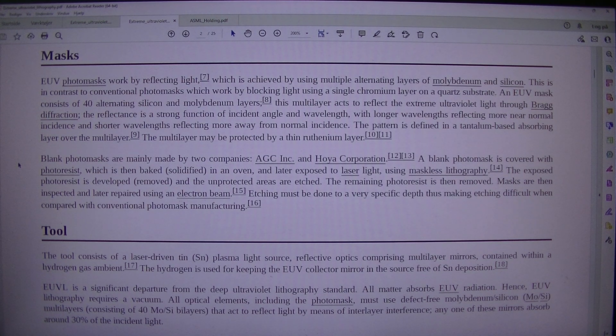Tool: The tool consists of a laser-driven tin plasma light source, reflective optics comprising multilayer mirrors contained within a hydrogen gas ambient. The hydrogen is used for keeping the EUV collector mirror in the source free of tin deposition. EUVL is a significant departure from the deep ultraviolet lithography standard. All matter absorbs EUV radiation, hence EUV lithography requires a vacuum.